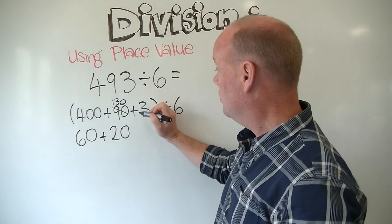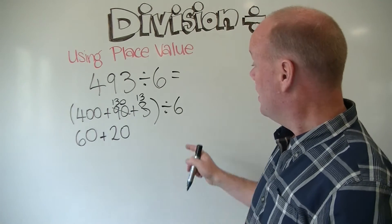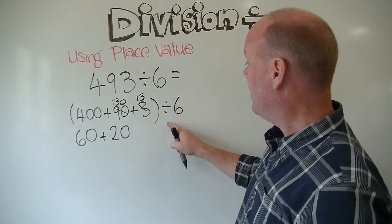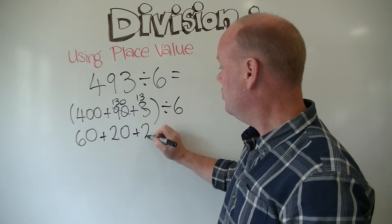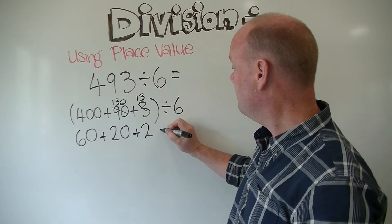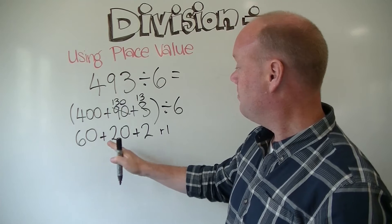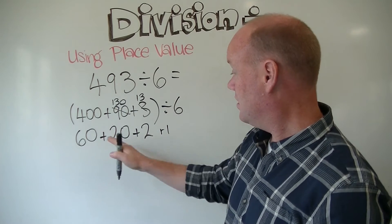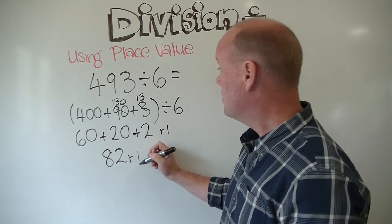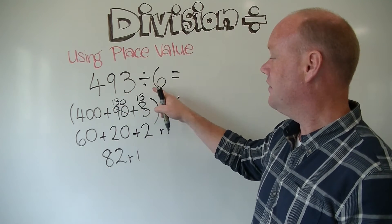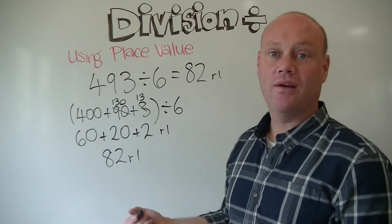I add that 10 to the 3, so it becomes 13. Now I divide 13 by 6: I know 12 divided by 6 is 2, but I still have a remainder of 1. Adding all the parts back together: 60 plus 20 plus 2 is 82 remainder 1. So 493 divided by 6 is 82 with remainder 1.